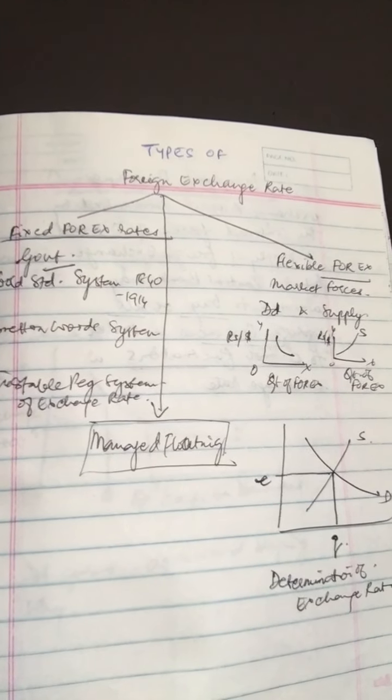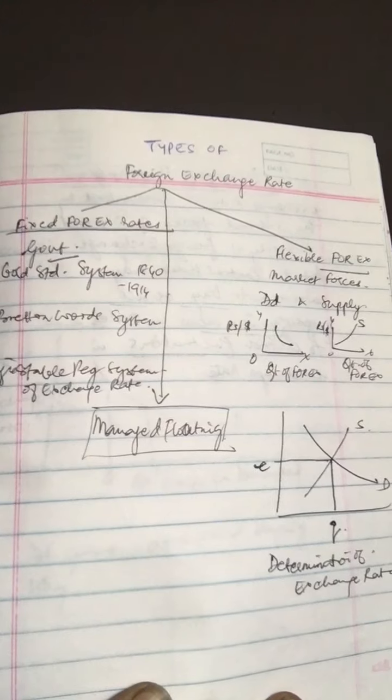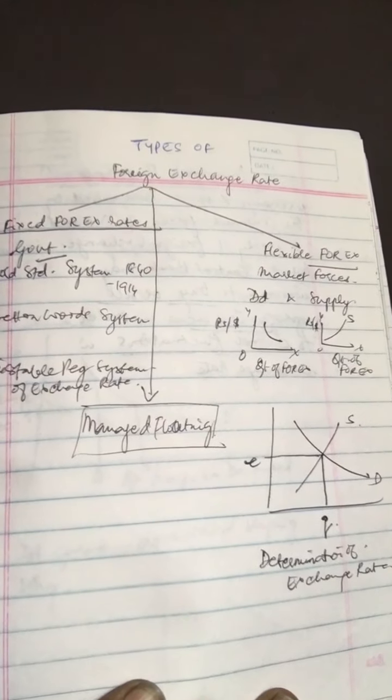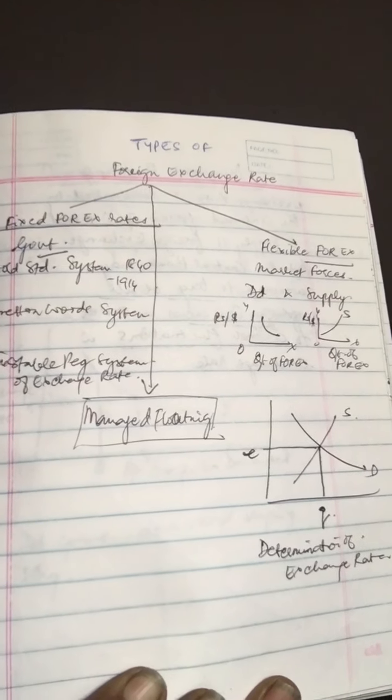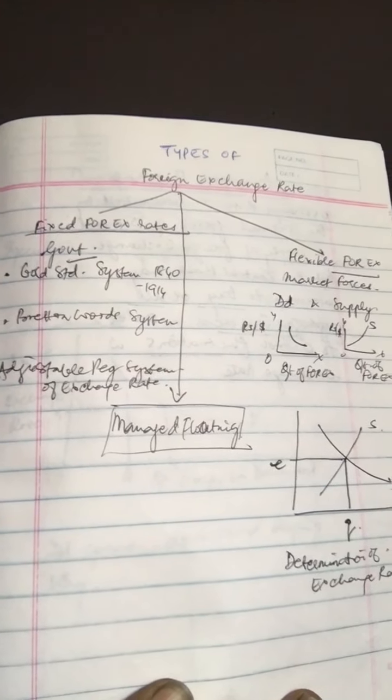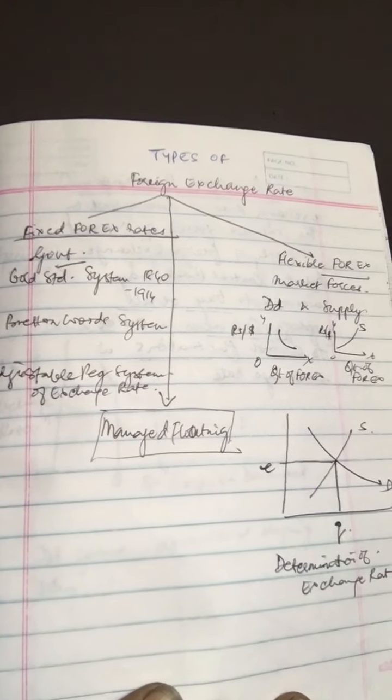Nowadays, I think it's gone to 74 odd rupees for a dollar. Foreign exchange rate is the rate at which one currency can be converted into another currency, so rupee is being converted into dollars, vice versa.